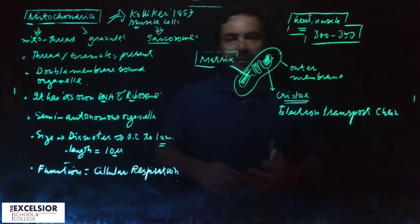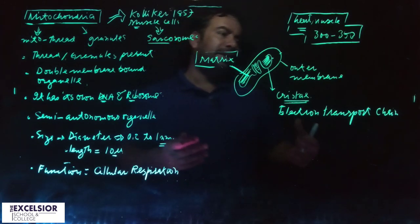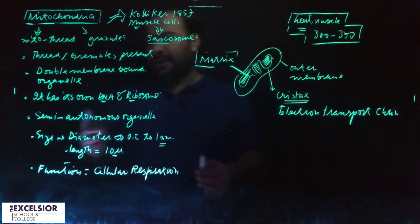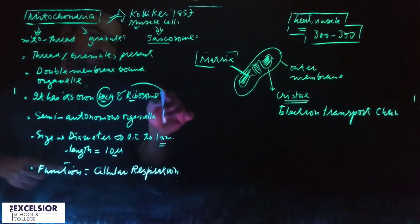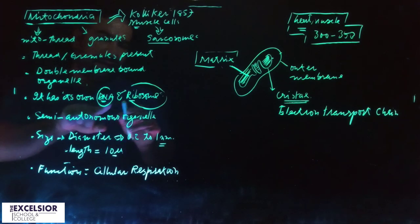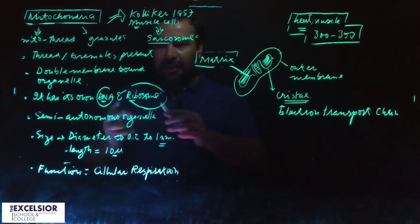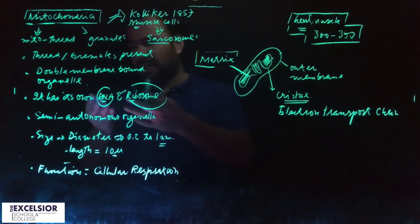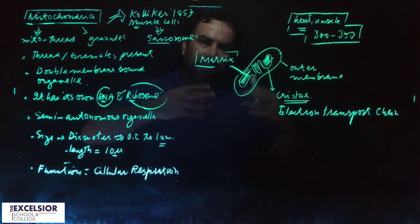Evolutionarily it is going to develop into some new cell. How? Because they have their own DNA and they have their own ribosomes. If you have your DNA and you have protein factories, you can guide the formation of different types of proteins that can be used in the formation of your own body.